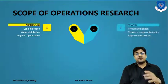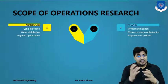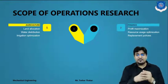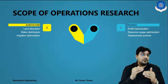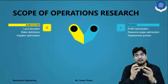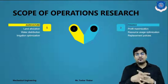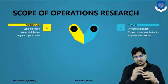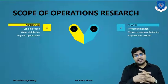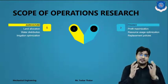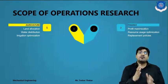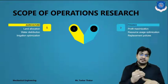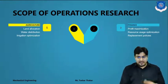The second scope area is finance, for profit maximization. For example, when investing in the stock market, you determine a target profit level at which you will exit. Similarly, you choose investments offering maximum interest rates. This is profit maximization in finance, and Operation Research is applied here.